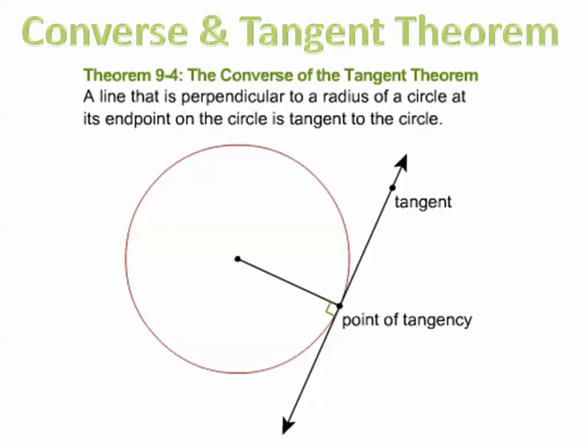The converse of the tangent theorem says a line that is perpendicular to a radius of a circle at its endpoint on the circle is a tangent to the circle. So if you see a line that's perpendicular to the point of tangency, you've got a tangent.